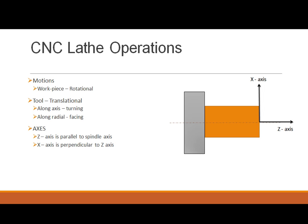Now let's talk about the coordinate system scenario. For the milling machine centre, we work in the Cartesian coordinate system where the work table is the XY plane and depth is the Z coordinate. When we come to lathe operations, the coordinate system changes because we are only handling cylindrical objects, so we no longer need a full three-dimensional system.